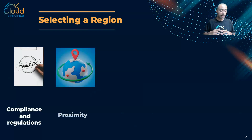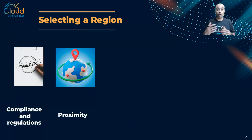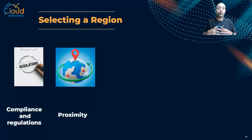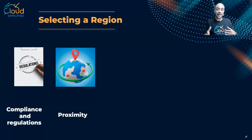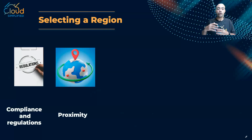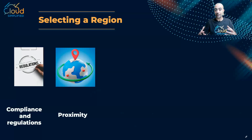The second criterion is to choose a region that is close to your customers, in order to have very low latency and delay and to provide a very good customer experience. So criterion two is proximity to your users — choose a region that is close to your users.